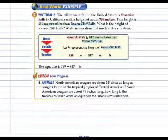The tallest waterfall in the United States is Yosemite Falls in California with a height of about 739 meters. This height is 617 meters taller than Raven Cliff Falls. Write an equation that models this. H represents the height of Raven Cliff Falls. Yosemite Falls is 739 meters tall, which equals the height of Raven Cliff Falls represented by H increased by 617 meters.